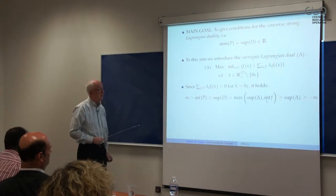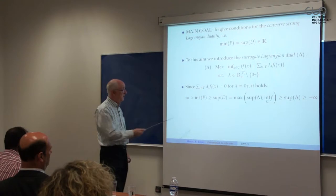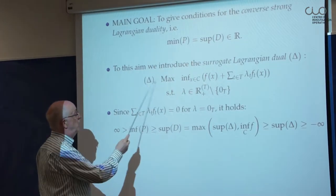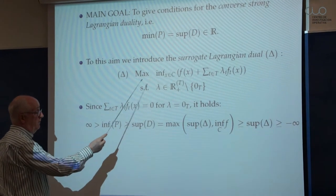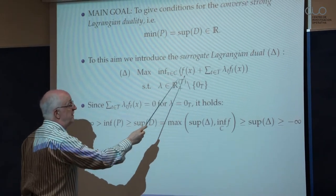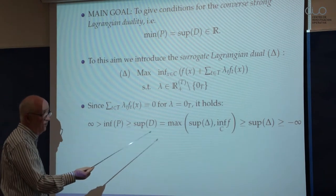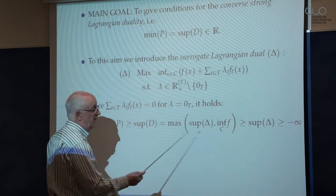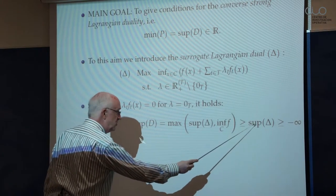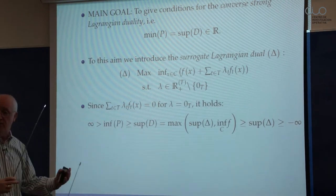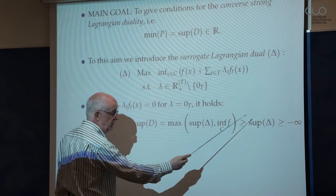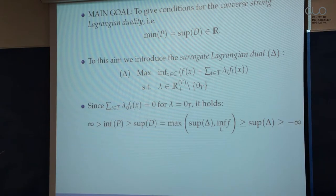I have the weak dual inequality, and observe that the standard dual optimal value is the maximum of the surrogate dual optimal value — corresponding to all possible lambdas different from zero — and, when lambda equals zero, the infimum over C of the objective function. So this supremum equals the maximum of these two terms. If I can prove that this surrogate supremum equals the primal infimum, then this middle term also coincides, and I will have no duality gap.